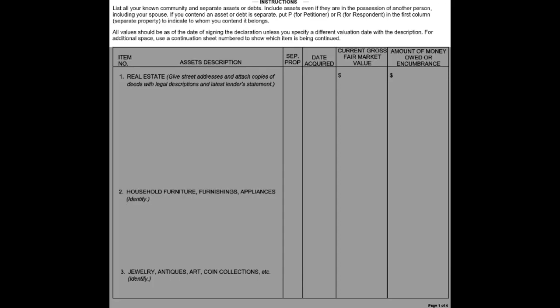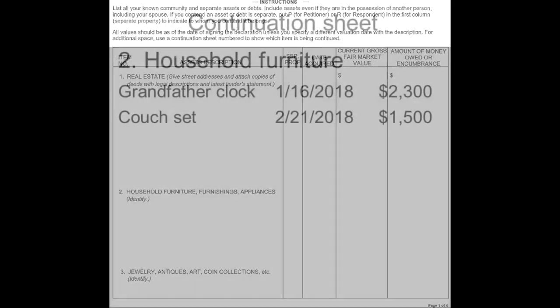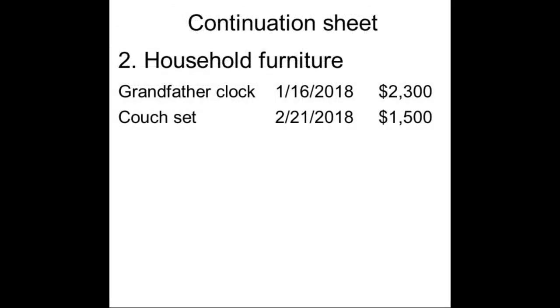In the fourth section, check petitioner. The rest of the form will list all of your known community and separate assets or debts. Include things even if they are in the possession of another person. If you contend an asset or debt is separate, put P for petitioner or R for respondent in the first column to indicate to whom it belongs.